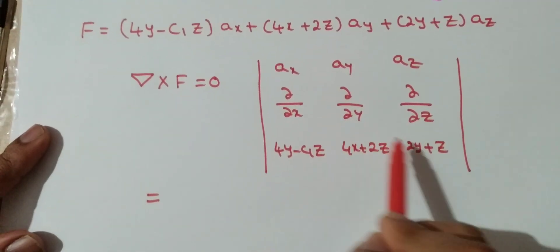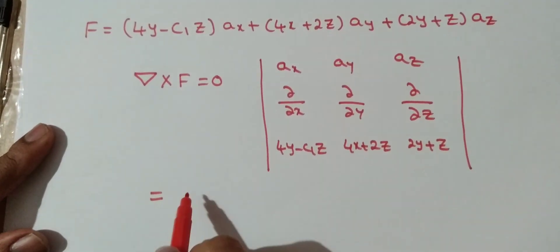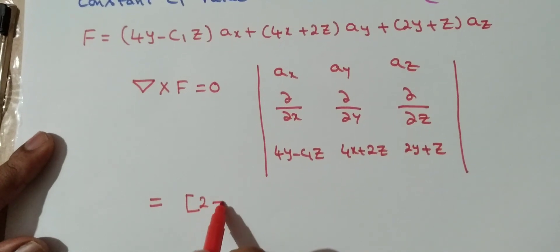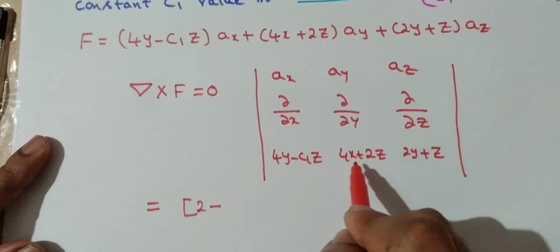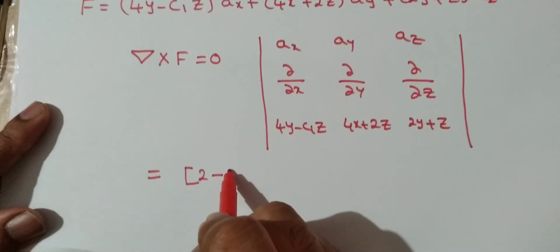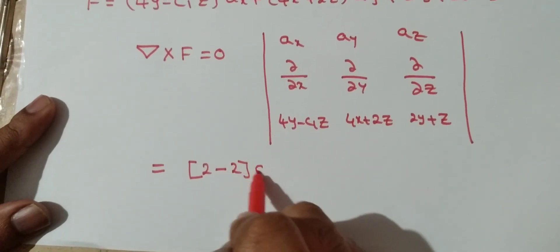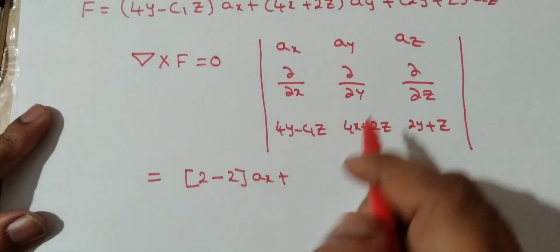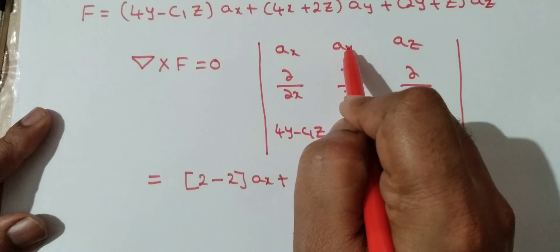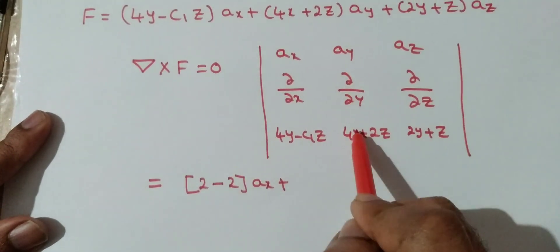So, ∂/∂y of (2y + z) equals 2, minus ∂/∂z of (4x + 2z) equals 2, giving [2 - 2]ax. Now neglect this column and row.